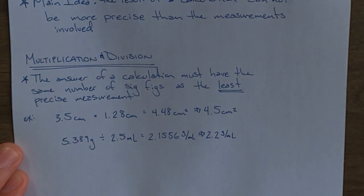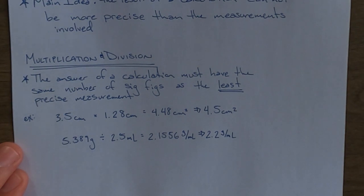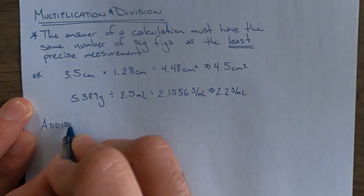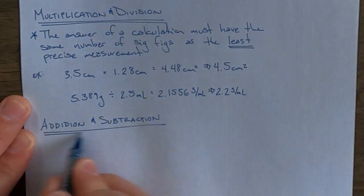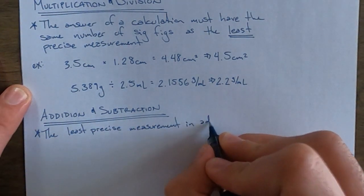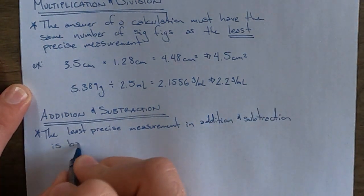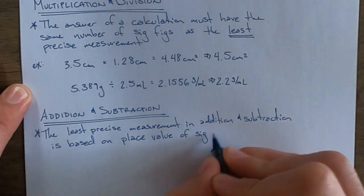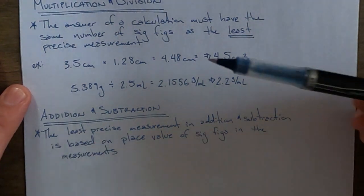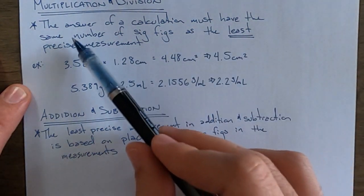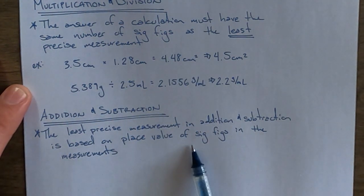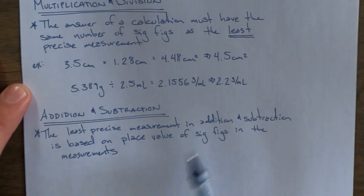We're going to move on to addition and subtraction, which really isn't that hard, but people always get confused about this rule or forget this rule. While in multiplication and division it's really about the number of sig figs, in addition and subtraction it's all about the place value. We'll look at two examples and how they would work in real life.